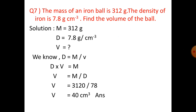Density D equals m divided by v, so v equals m divided by d, that is 312 divided by 7.8. Removing the decimal point, we get 3120 divided by 78, which equals 40 cubic centimeters.